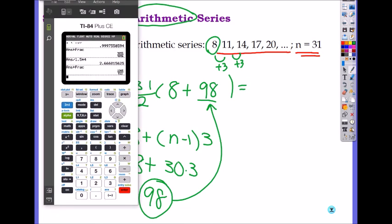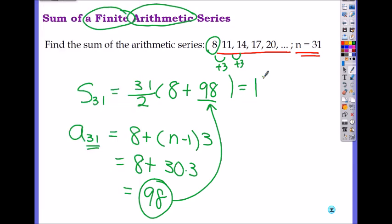And when you plug into the calculator, what do you get? Let's just plug into the calculator. So 31 divided by 2 times parenthesis, 8 plus 98. You get 1643. It's the sum of 31 numbers. All 31 sequences. That's the formula. When you divide this by 2 or just put it there, it's the same thing.